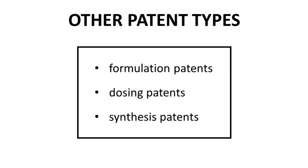There are other important patent types beyond the composition of matter patent. There are formulation patents that protect innovations of drug formulation, perhaps a vital pill coating or ratios of ingredients within the formulation. There are dosing patents in cases that require a very particular dosing regimen to ensure safety and efficacy of the drug. You can even patent the synthetic method used to prepare the final drug or a key intermediate. These types of patents are generally filed well after a composition of matter patent, as the new formulation or dosing protocol is not discovered until a compound advances into clinical trials.